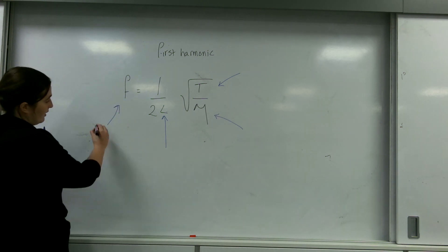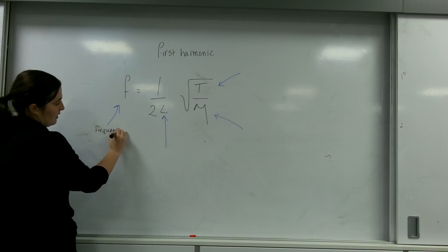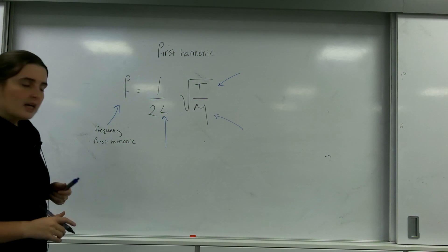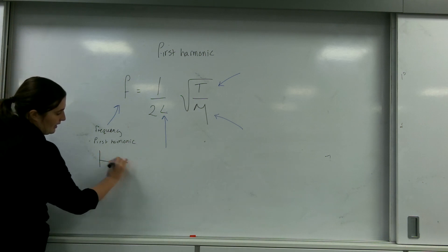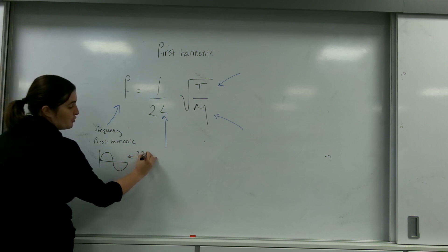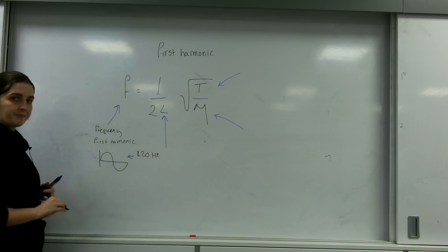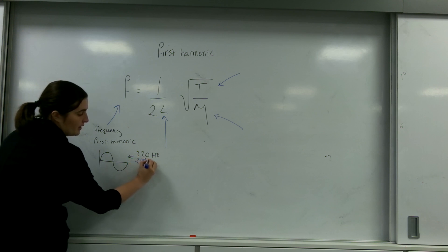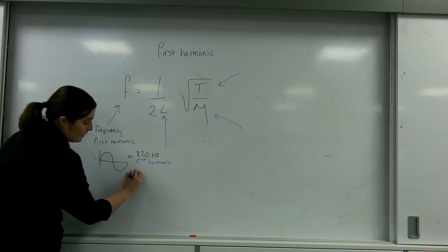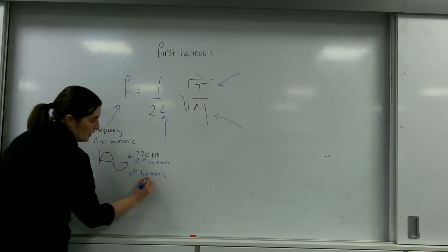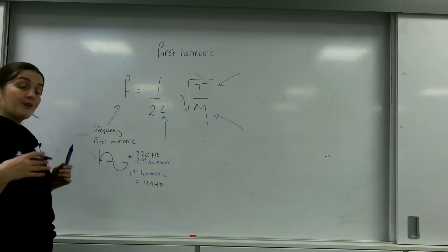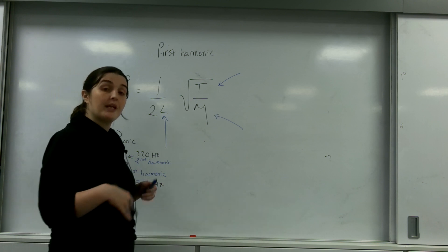This letter F is the frequency of the first harmonic. So if you calculated the second harmonic to be 220 Hz, the frequency for the first harmonic is 110 Hz. It's important that if you've calculated something for the third harmonic, you would divide it by 3, and so on.